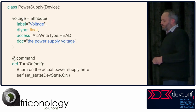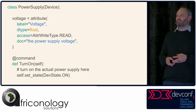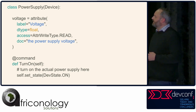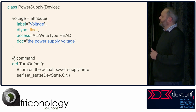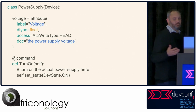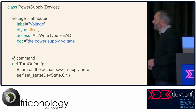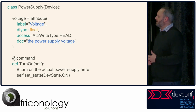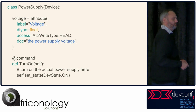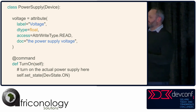Here's an example Tango device server for a fictional power supply. The two main concepts are attributes and commands. The voltage attribute exposes the current voltage to clients, with a defined data type, description, and access level — read-only in this case. Commands are functions you can execute on a device server: a turn-on command makes the device do whatever it needs to turn on and then set its state to on, which any client can observe.